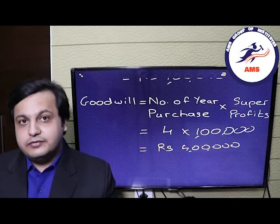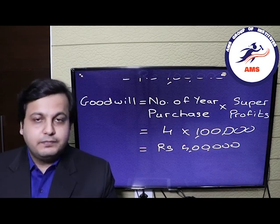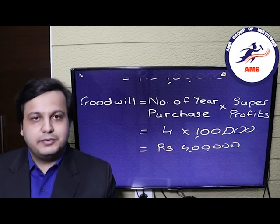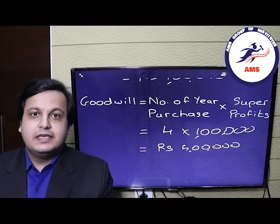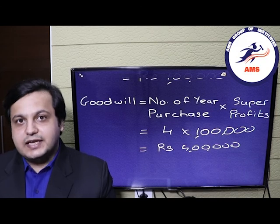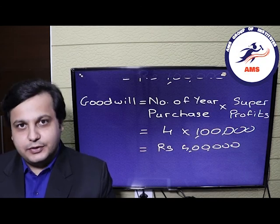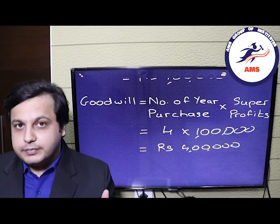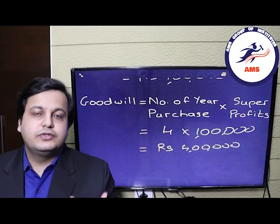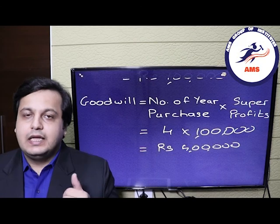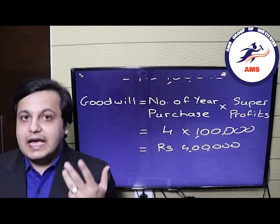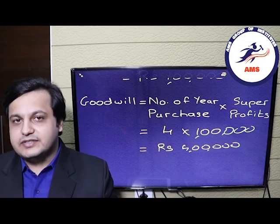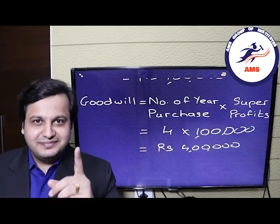This is it for goodwill using the super profits method — the answer was 4 lakh rupees. If you found this video useful, please give it a thumbs up and share this link with your fellow students. If you want us to make a video on any other topic, please use the comment section below. Like, subscribe, comment and share to support this channel. Happy learning!